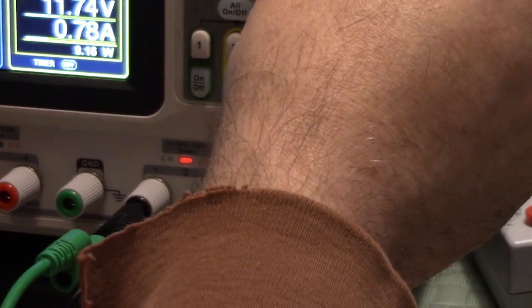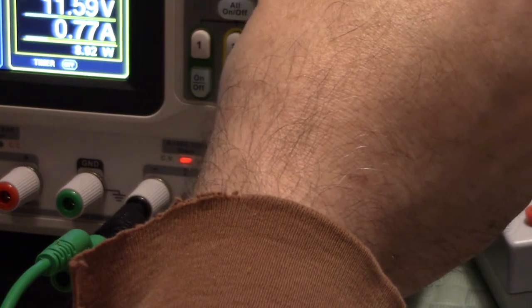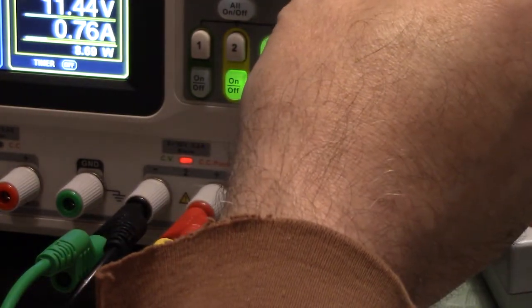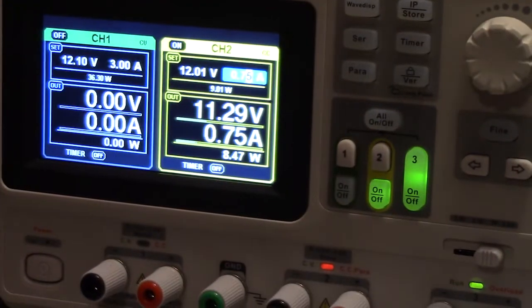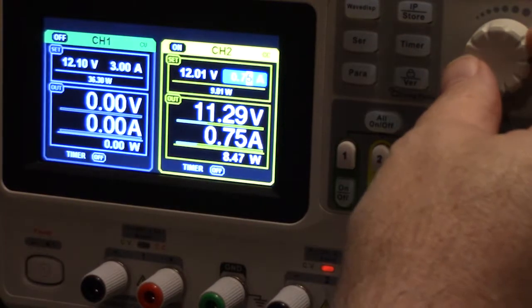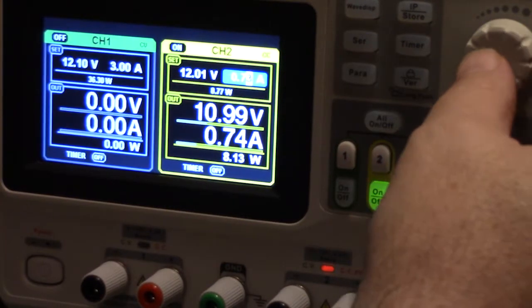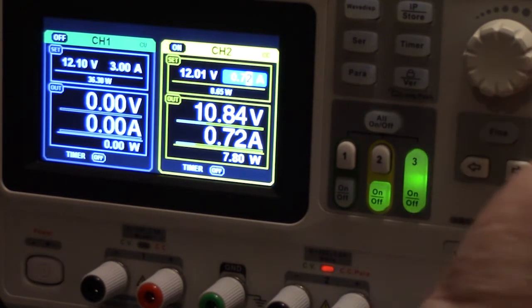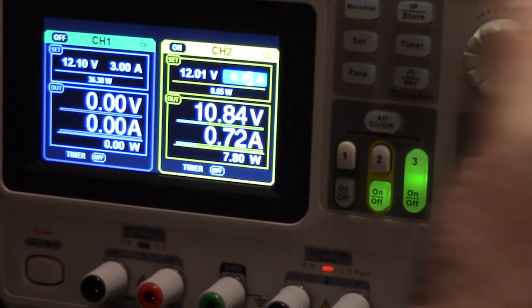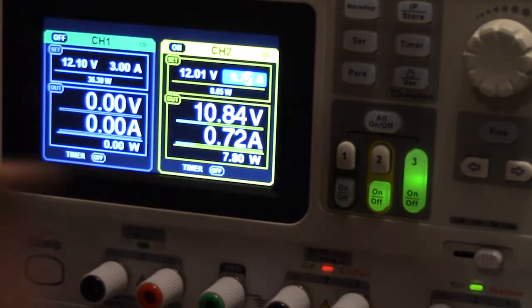I always thought these things are supposed to shut off if you get beyond this. This doesn't shut off, this just degrades the voltage. See the voltage coming down as I'm reducing the current limit. It's reducing the voltage to drop the current. I'm usually used to these things shutting off when they hit the current limit, but as long as it's limiting the current that's fine, that's acceptable.